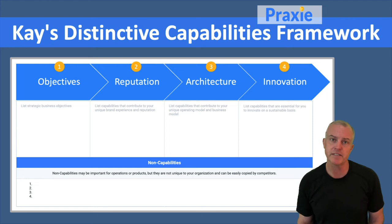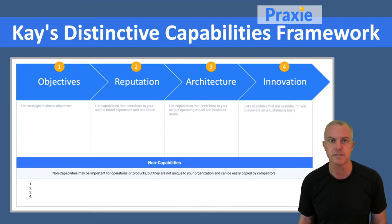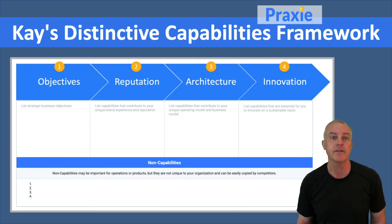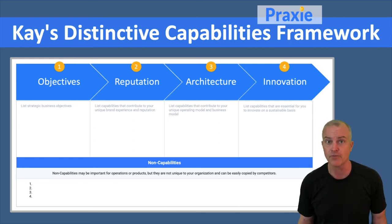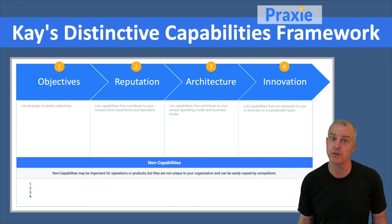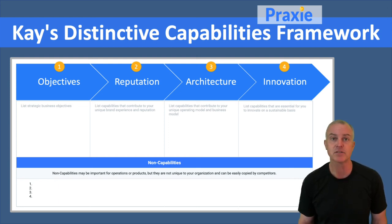And then the third area is innovation. Innovation is about products and services and your business model. So what are those innovations that are going to be created as solutions, as offerings, based on your architecture and the capabilities you have, that then help you fulfill your brand promise? So reputation, architecture, innovation — they all go together. And that's what creates your distinctive capabilities.